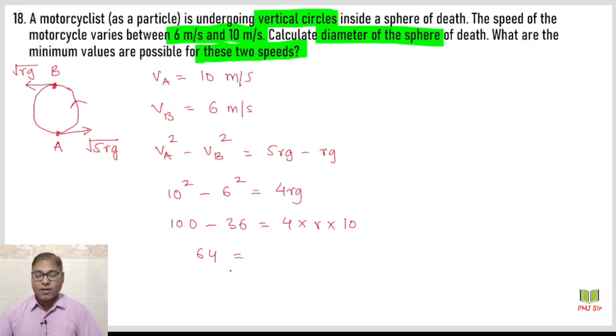So R equals 64 upon 40, which simplifies to 16 upon 10, that is 1.6 meters. The question asks for diameter, so diameter is two times of radius, that is 2 into 1.6 which equals 3.2 meters.